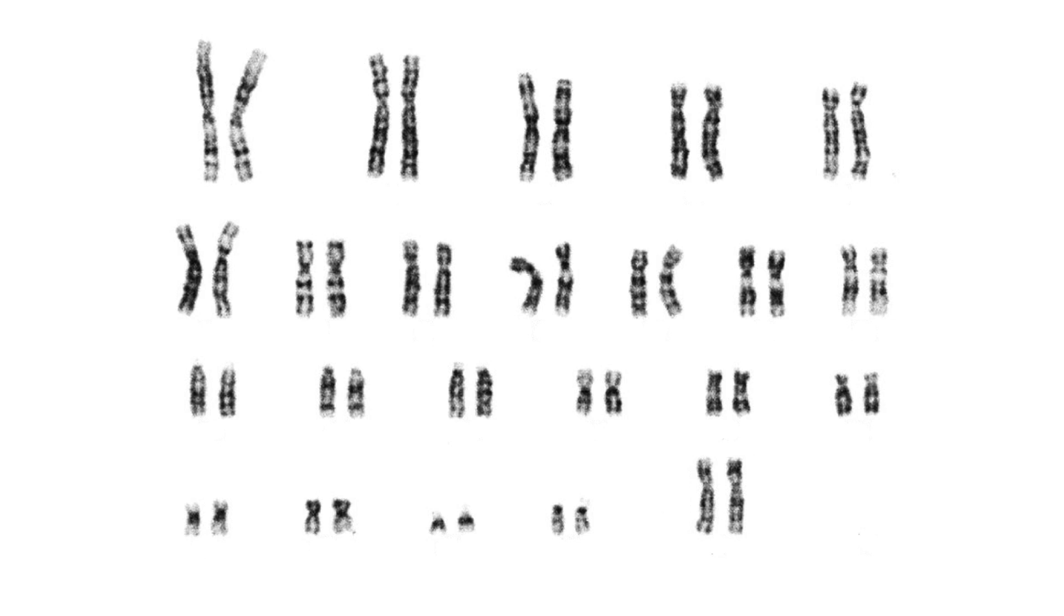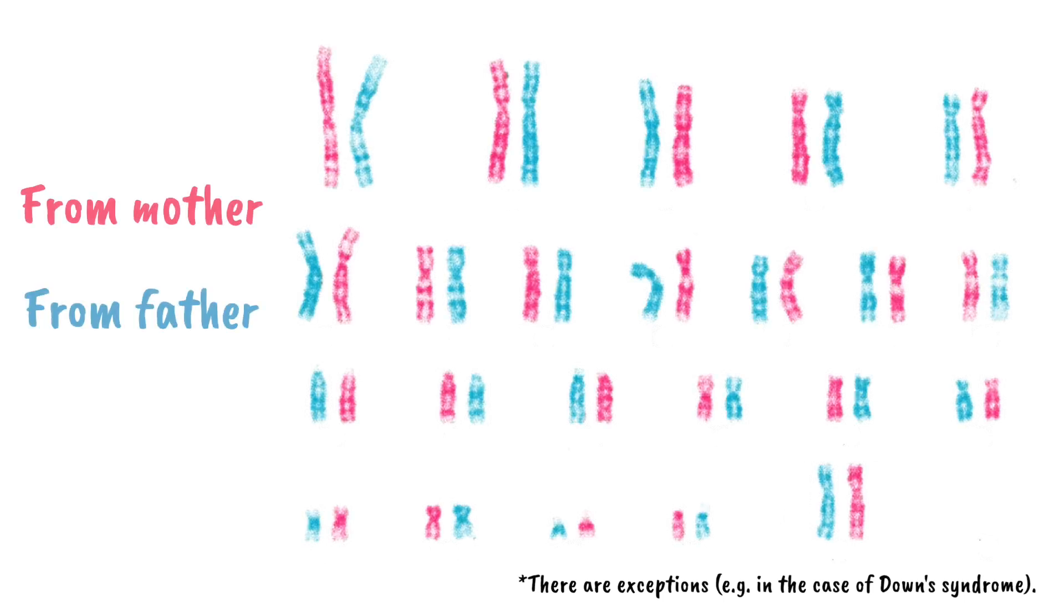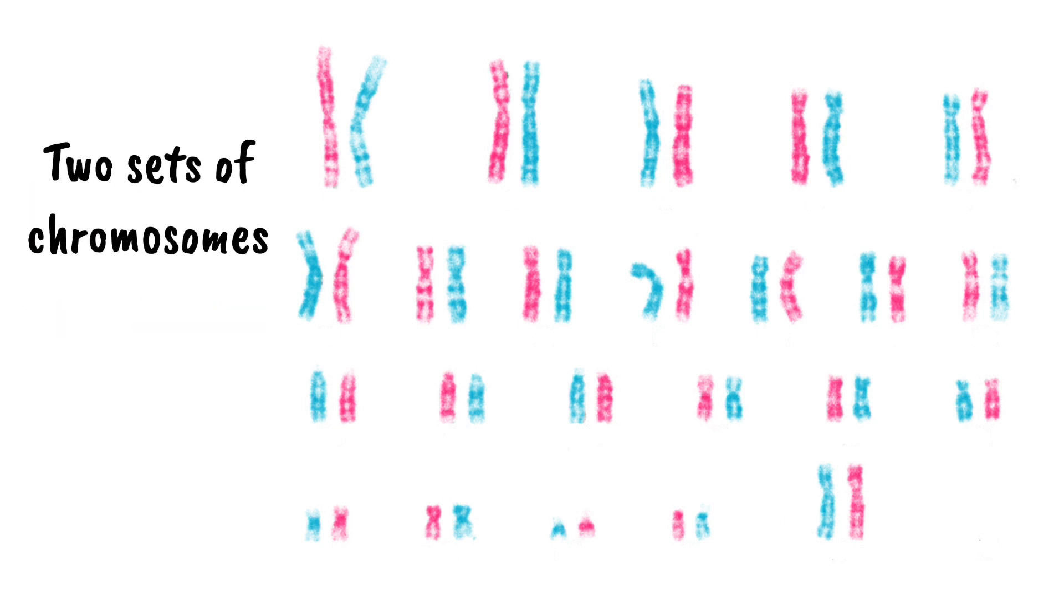Humans have 23 pairs of chromosomes, totalling 46 chromosomes in their cells. They get 23 chromosomes from their mother and 23 from their father. Since each person inherits two sets of chromosomes, one from each parent, this means they inherit two of every gene.